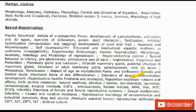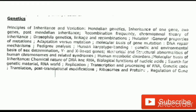Further topics in sexual reproduction include population explosion — causes and effects — birth control measures: natural methods, physical barrier, biochemical, hormonal, immunological, and surgical methods, IUDs, amniocentesis, female feticide, MMR, IMR, MTP studies, infertility disorders of female reproductive system, sexual dysfunction, infertility causes and curative measures, reproductive toxicology of environmental and industrial chemicals, drugs and alcohol, and medically assisted reproductive technologies — GIFT, IUT, ZIFT, TET, embryo culture.